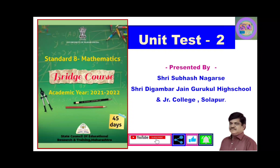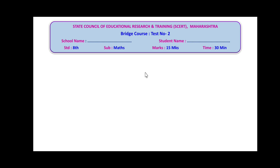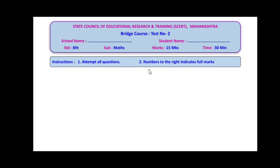Today we are going to discuss a new unit test. Before starting, we have written all the details on the front page of the answer sheet: State Council of Education Research and Training (SCERT), Maharashtra, bridge course test number two. You have to write your school name, your own name, standard is eighth, division if applicable, subject is mathematics, date March 15, and time duration allotted is 30 minutes. Instructions: attempt all questions; numbers to the right indicate full marks.